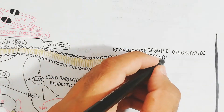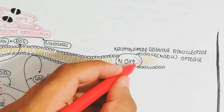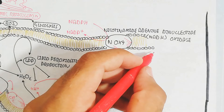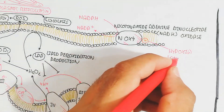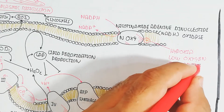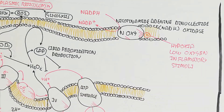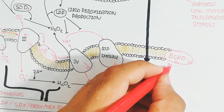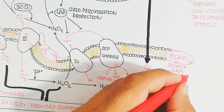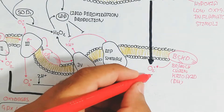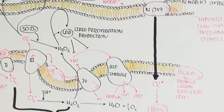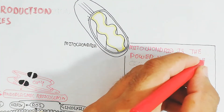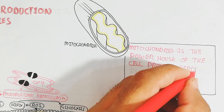Nicotinamide adenine dinucleotide oxidase enzyme is present in the outer membrane of the mitochondria. It is important for converting NADH to NAD+ through oxidation. Hypoxia, low oxygen, and inflammatory stimuli trigger this enzyme more, leading to more reactive oxygen species moving into the inner mitochondrial matrix. Inside, the branched-chain ketoacid dehydrogenase enzyme converts substrates to produce more reactive oxygen species.